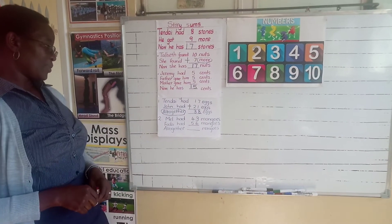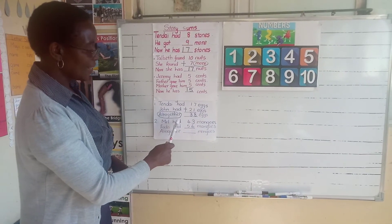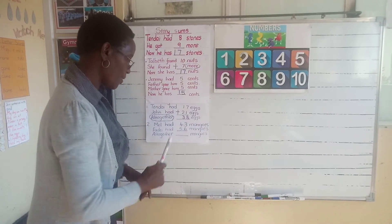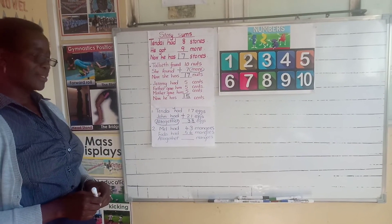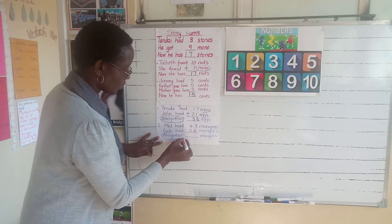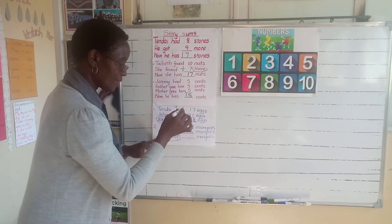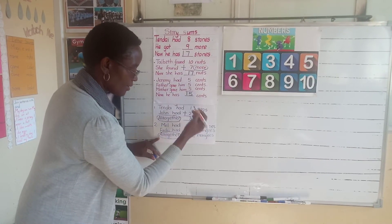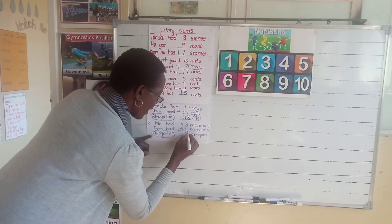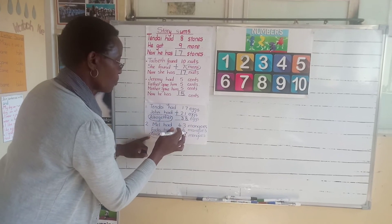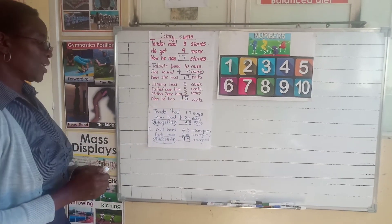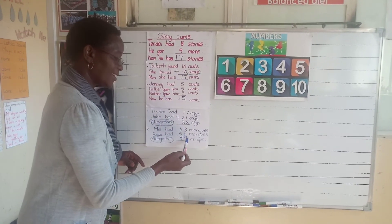Let's look at another example. Male had 43 mangoes and Fazi had 56 mangoes. All together, how many mangoes did they have? Our keyword again is 'all together.' When we are adding, we start from the right hand side. So three plus six is nine — put your nine down. And then four plus five, you find that is nine. So all together, they've got 99 mangoes.